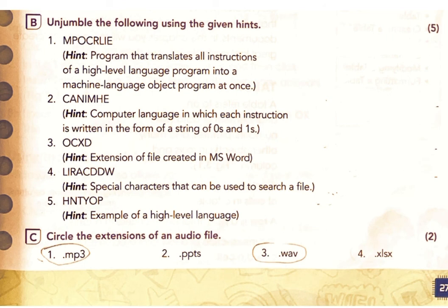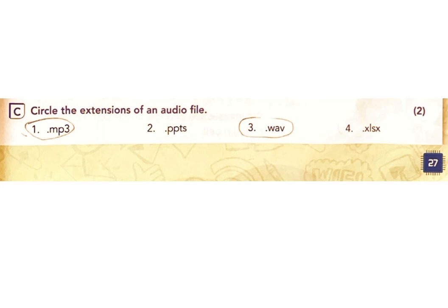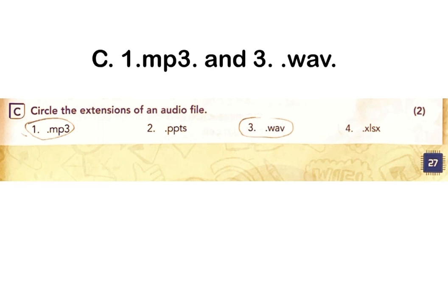Question 4: 'L I R A C D D W' — Hint: Special characters that can be used to search a file. Answer: Wild card. Question 5: 'H N T Y O P' — Hint: Example of a high-level language. Answer: Python. Section C: Circle the extensions of an audio file from the list: 1) .mp3, 2) .pptx, 3) .wav, 4) .xlsx. Answer: 1) .mp3 and 3) .wav.